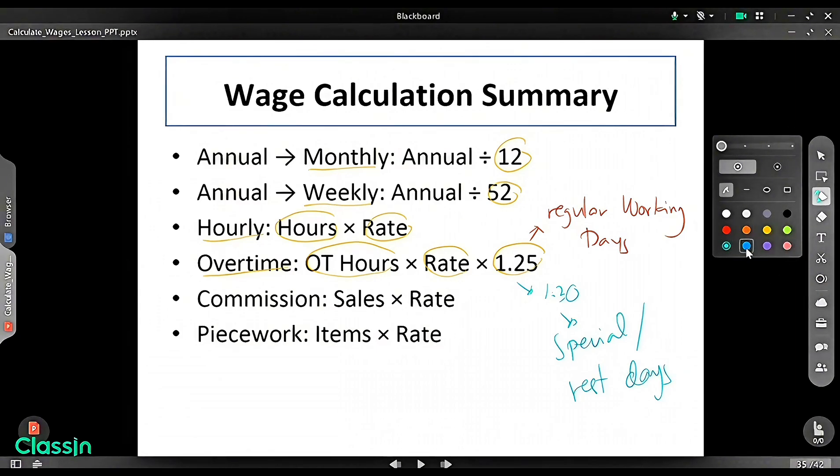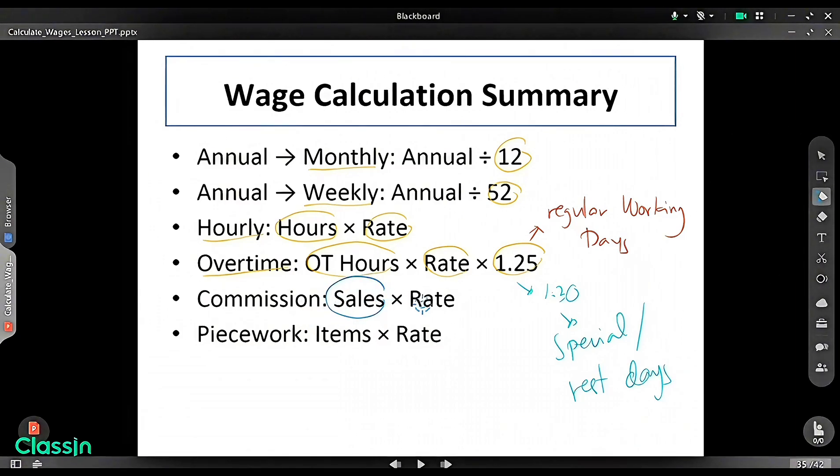For the commission, you just need to multiply the total sales times the rate. For piecework pay, all you need to do is to multiply the total items times the rate.